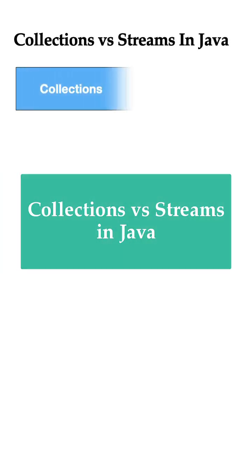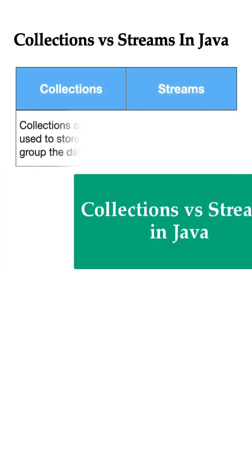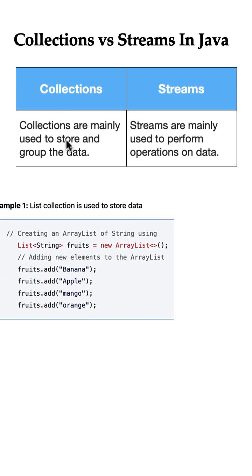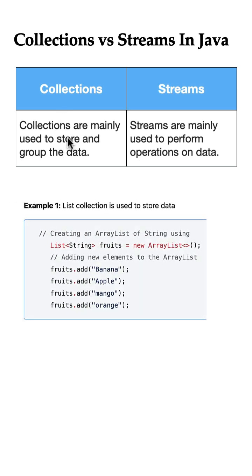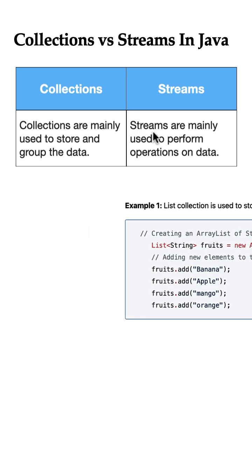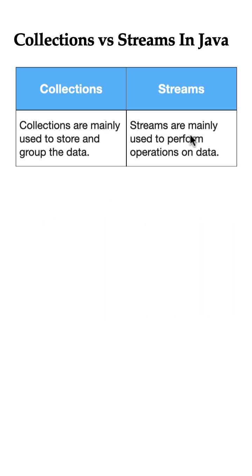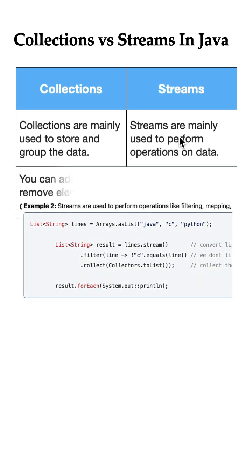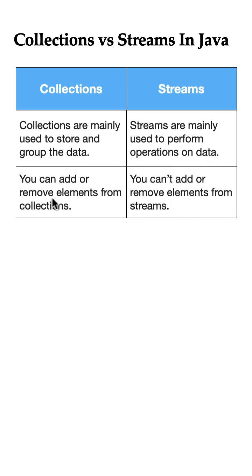What is the difference between collections and streams in Java? Collections are mainly used to store and group the data. For example, we can use collections like List, Set, and Map to store and group the data. On the other hand, streams are mainly used to perform operations on data, for example filtering, matching, and mapping.